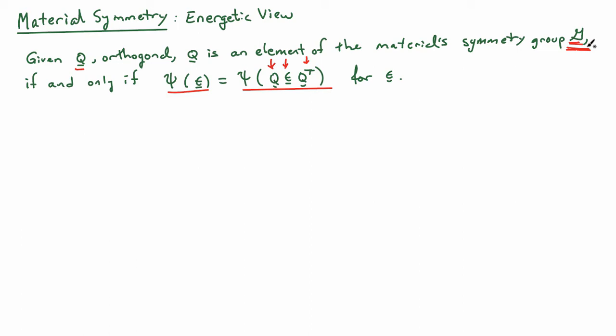Conceptually, what you can think of here is that I have a material and I'm looking at a point and I apply a strain. Let's say it's a uniaxial strain, epsilon N outer product N, where N is some direction that I'm applying the uniaxial strain in.